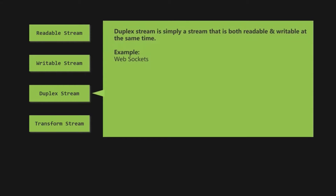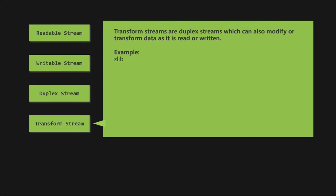A duplex stream is simply a stream that is both readable and writable at the same time — a combination of both. A good example is the websocket from the net module, a communication channel between client and server that works in both directions and stays open once established. Real-time chat apps use websockets. Transform streams are duplex streams that can also modify or transform data as it is read or written — a good example is the zlib core module used to compress data, which uses a transform stream.